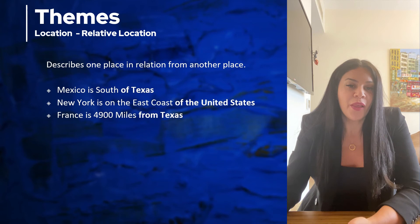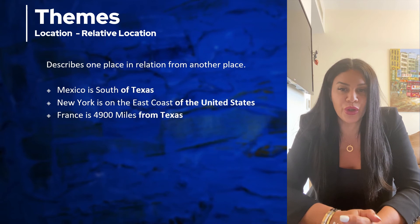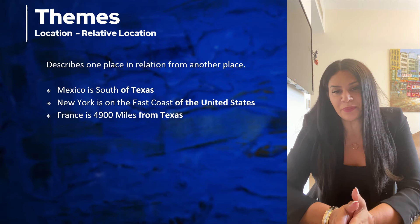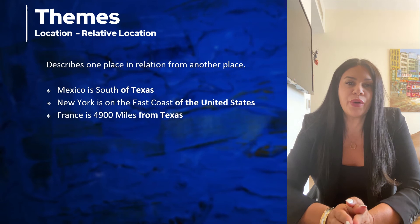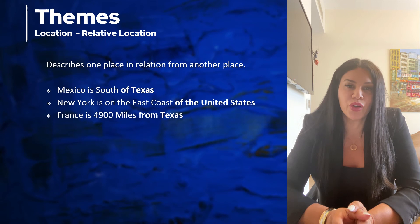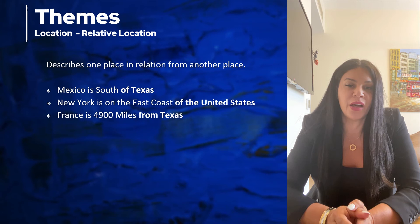The other type of location is relative location, which doesn't use coordinates but describes the location by where it is in relation to another location. For example, Mexico is south of Texas; New York is on the east coast of the United States; and France is about 4,900 miles from Texas. Relative location describes one place in relation to another place.